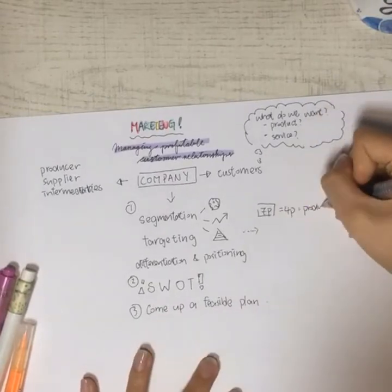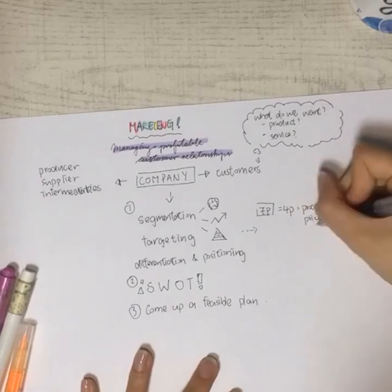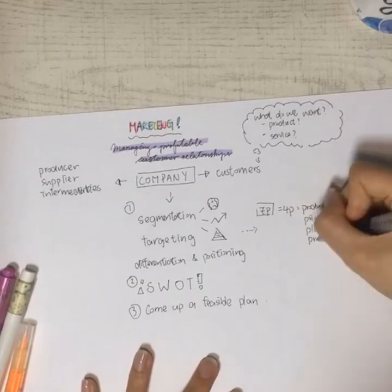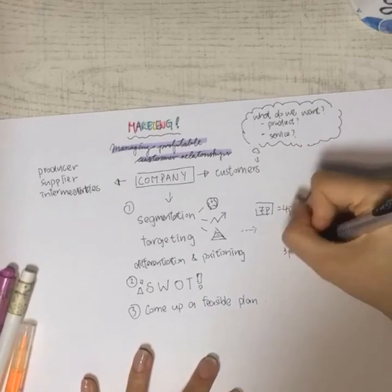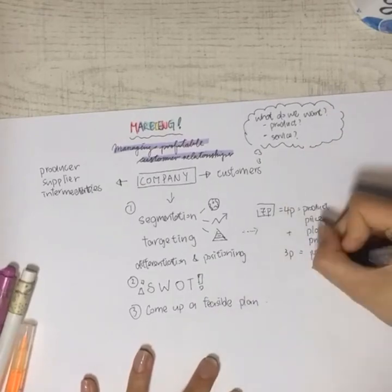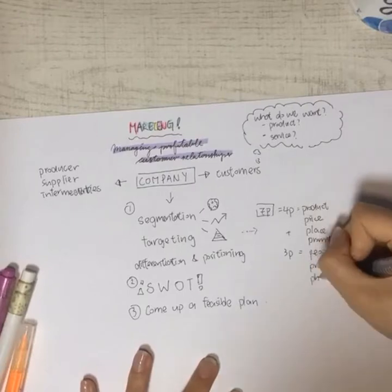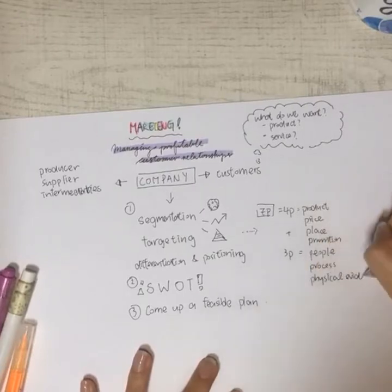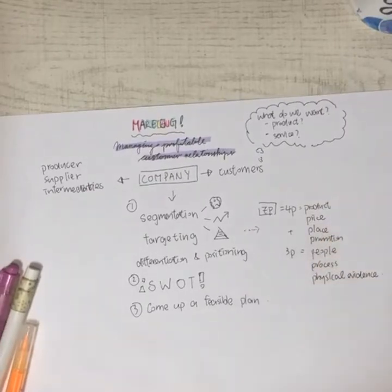After that, we have to go to the SWOT. Sounds familiar, the strength, the weakness, opportunity, and risk. After evaluating all of them, we can finally come up with a feasible plan. But before talking about the feasible plan, we have to actually do some analysis and find our target customer and their intended positioning by the 7P.